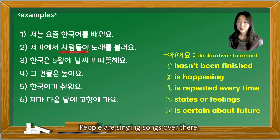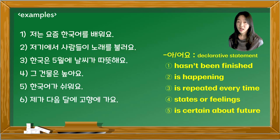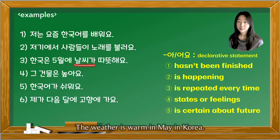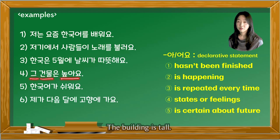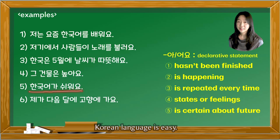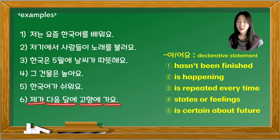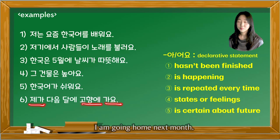Here are examples: People are singing songs over there. 한국은 5월에 날씨가 따뜻해요 — The weather is warm in May in Korea. 그 건물은 높아요 — The building is tall. 한국어가 쉬워요 — Korean language is easy.